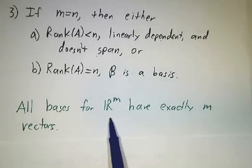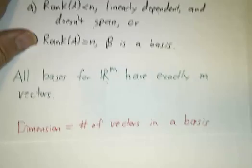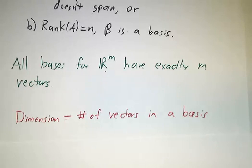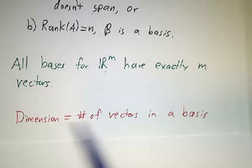So all bases have the same number of vectors. All bases for R^m have m vectors. And we said that the dimension of R^m is m. So dimension is the same thing as the number of vectors in a basis.